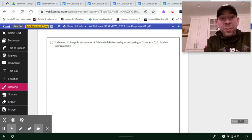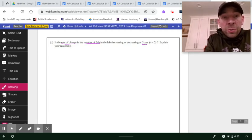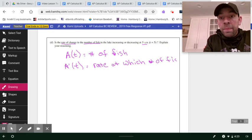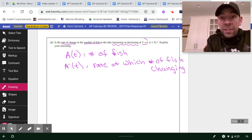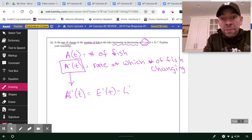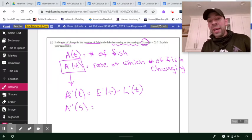Now, last but not least, part D is one of my favorite questions. They asked you, is the rate of change in the number of fish in the lake increasing or decreasing specifically at 5 a.m.? Well, here's what you want to recall. That function that we wrote back in part C, A of T, that was just for the number of fish. Now, when we derived that function and got A prime of T, this is now a function that models the rate at which the number of fish is changing. So another way to phrase this question is to say, is A prime of T increasing or decreasing at 5? Well, the only way to know whether this function is increasing or decreasing is to take another derivative. So we could say A double prime of T is going to be equal to E prime of T minus L prime of T.